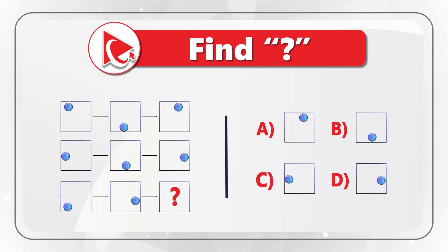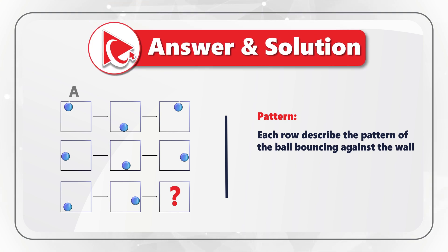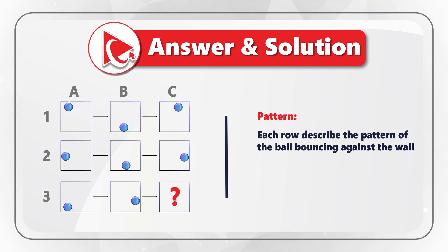To better solve this challenge, let's assign columns and rows to each object. We will have columns A, B, and C, and rows 1, 2, and 3. This allows us to reference objects more clearly. As you might have guessed, each row describes the pattern of a ball bouncing against a wall.